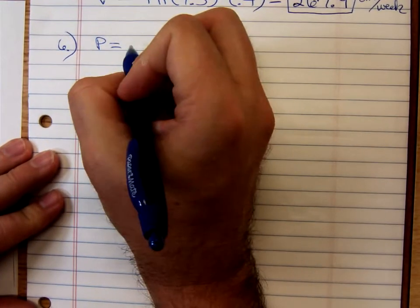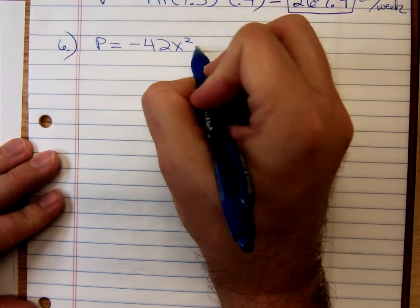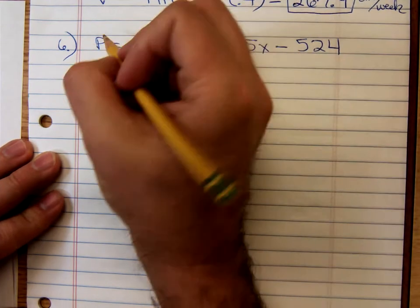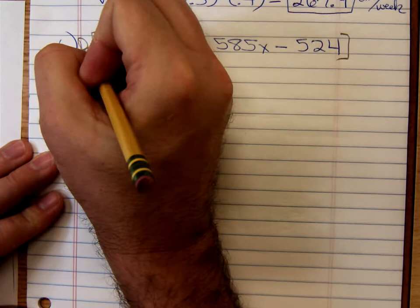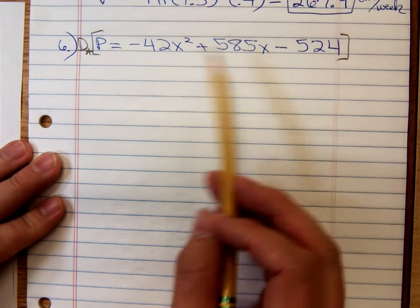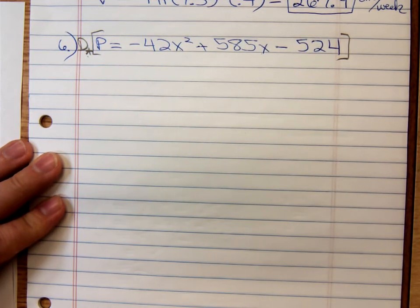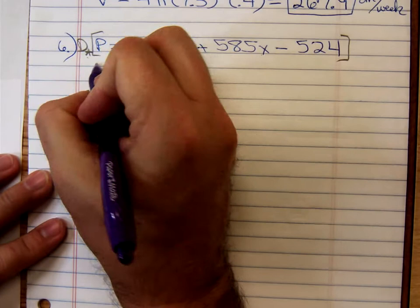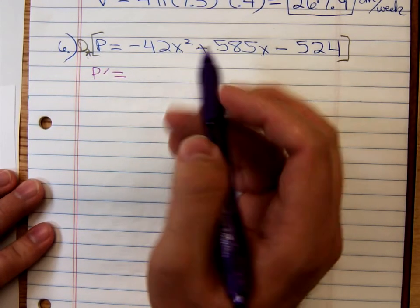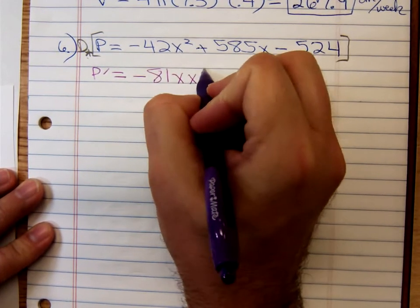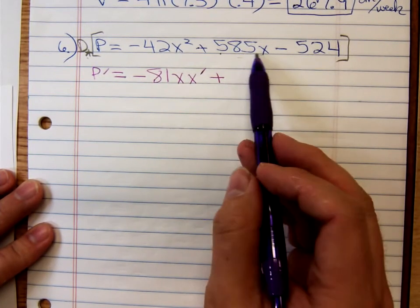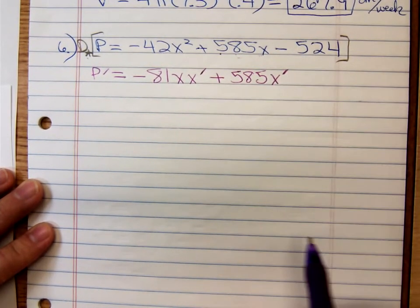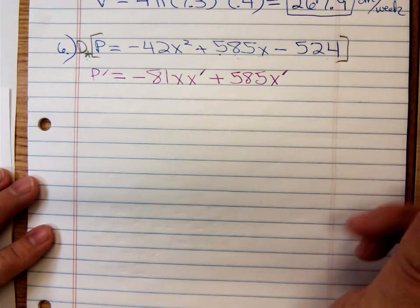Here's our profit function. P equals negative 42x squared plus 585x minus 524. And we're going to differentiate with respect to time. And remember, every variable that's different from time, you're going to have to stick on that prime. So, the derivative of p, that's just a p prime, equals the derivative of a negative 42x squared. That's a negative 81x times x prime plus the derivative of 585x. The derivative of 585 times a letter is 585. But then you have to stick on the x prime. Let me note that the derivative of that minus 524 is zero.